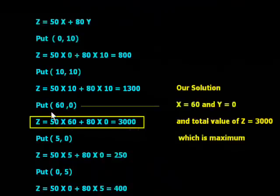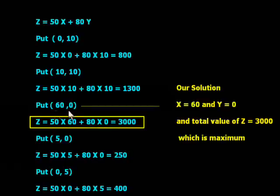And next corner point I am putting in my objective function: 50 into 60 plus 80 into 0, this is 3000.